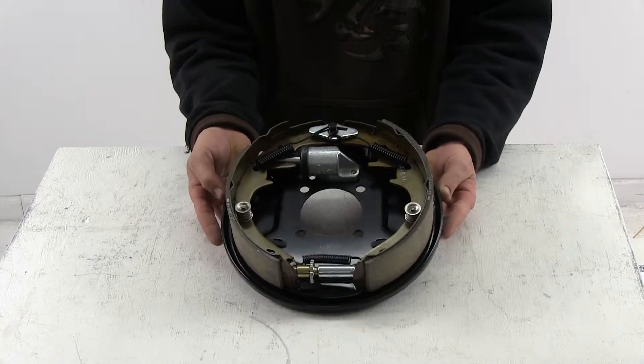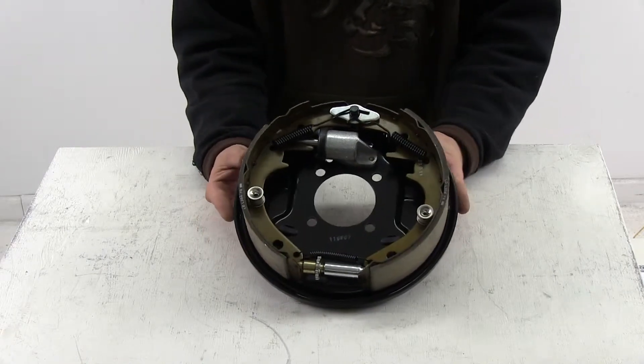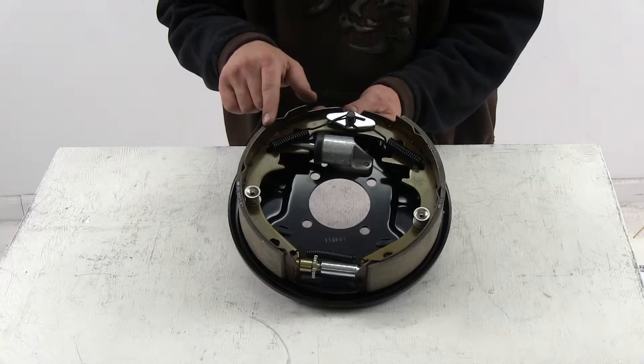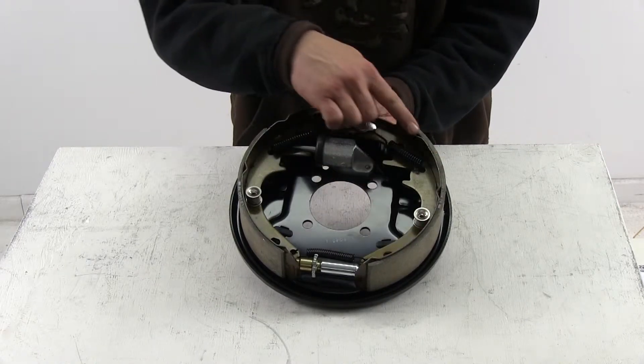This setup is for the right hand side. The reason we know this is for the right hand side is our leading shoe will always be smaller than the trailing shoe or primary.